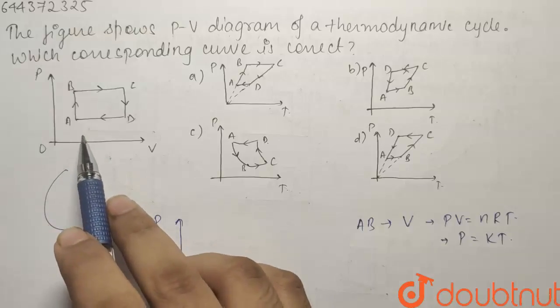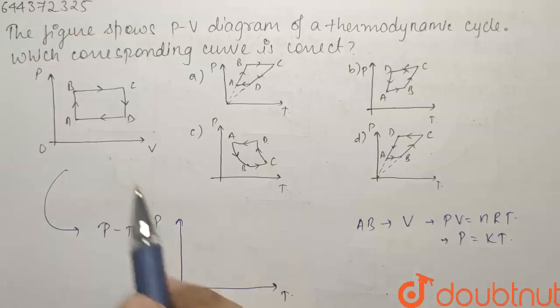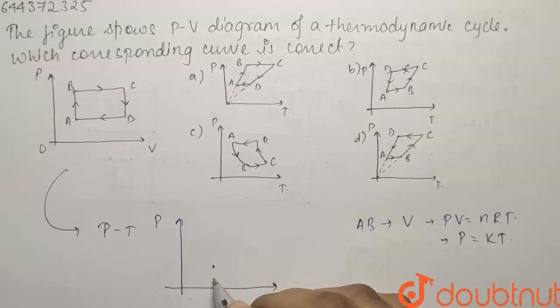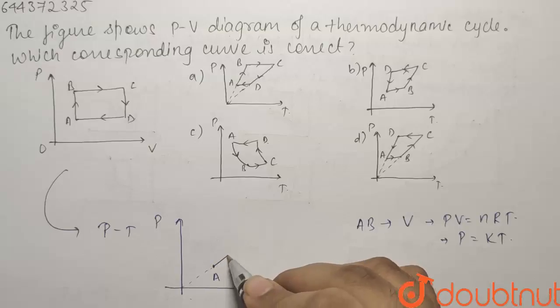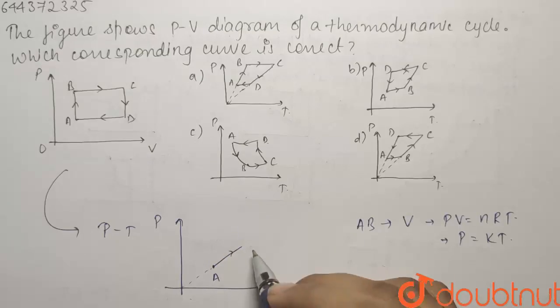If AB is my first process in which the pressure is increasing, if my point is A here and the pressure is increasing, it is a straight line passing through origin. So it would look something like this. This will be my process AB.